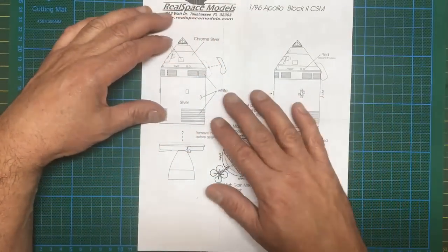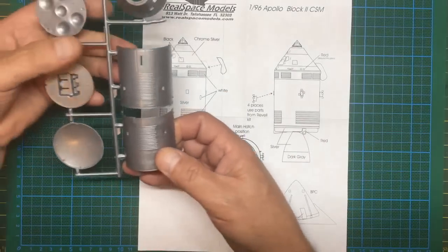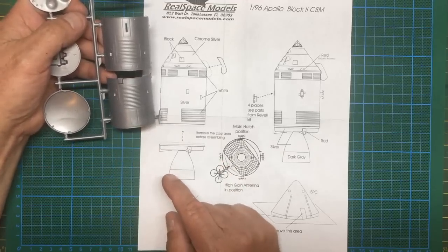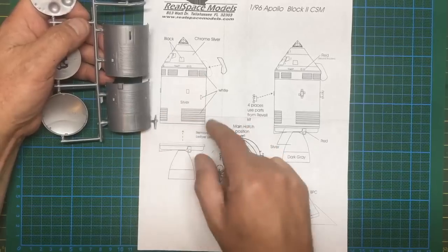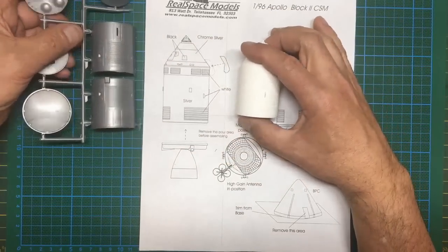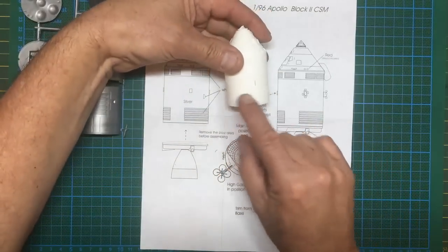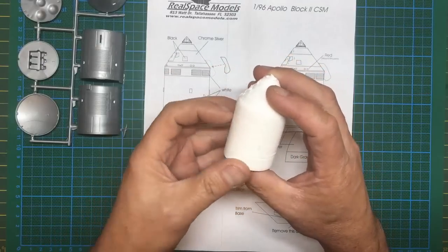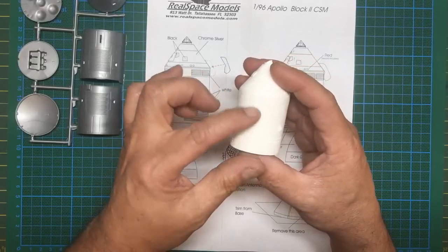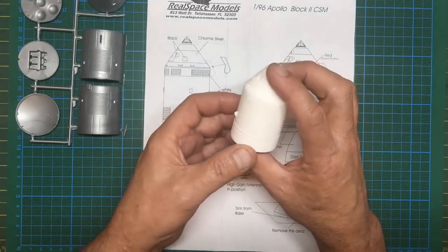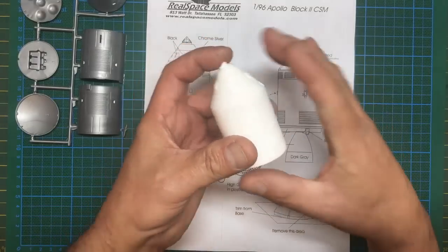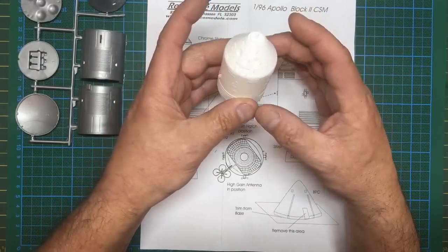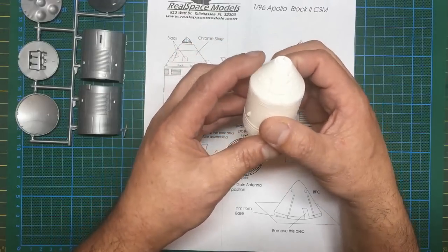The Revell parts, when you look at them, have got this grille here which is running longitudinally along the service module, whereas it should be narrower upper-lower grills running around, which is what you're getting with this resin set. You can see these grills here running around, and they're beautifully cast, beautifully molded, very sharp detail. We've got some panel detail on here as well. There's a bit of a bubble there on that part, but I'm not going to worry about that.